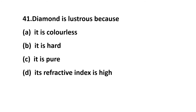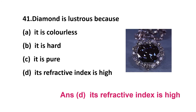Question 41: diamond is lustrous because — option A: it is colorless, option B: it is hard, option C: it is pure, option D: its refractive index is high? The correct answer is option D: its refractive index is high. That is why diamond is lustrous.